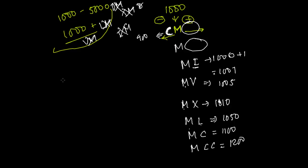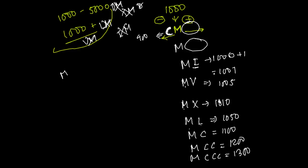After M you can put two C's to get MCC = 1200, and three C's to get MCCC = 1300. You cannot put four C's, but you can write 400 as CD. So M followed by CD gives 1000 plus 400, which is 1400.